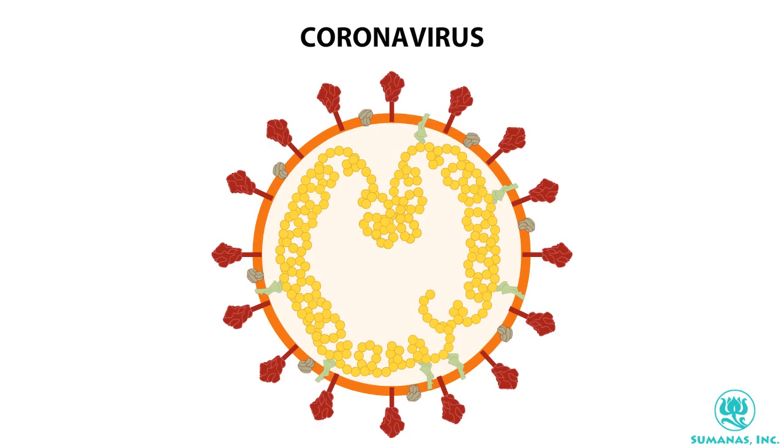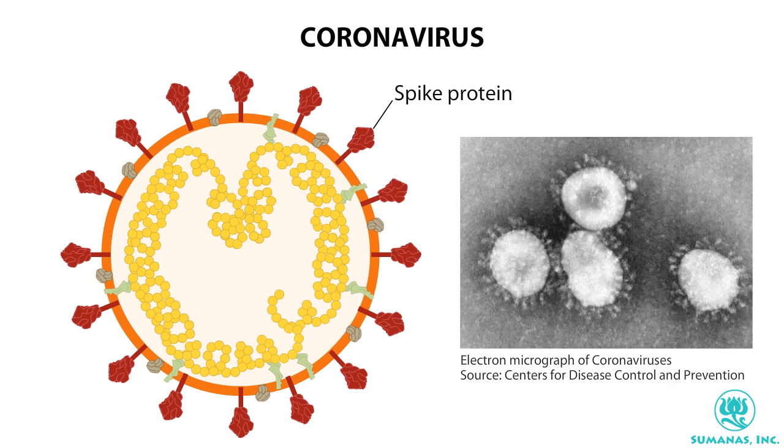Coronaviruses are a family of related viruses that infect humans and a variety of other mammalian and bird species. They're named for their spike proteins, which protrude from the viral surface, making these viruses appear to have a halo, similar to a solar corona.